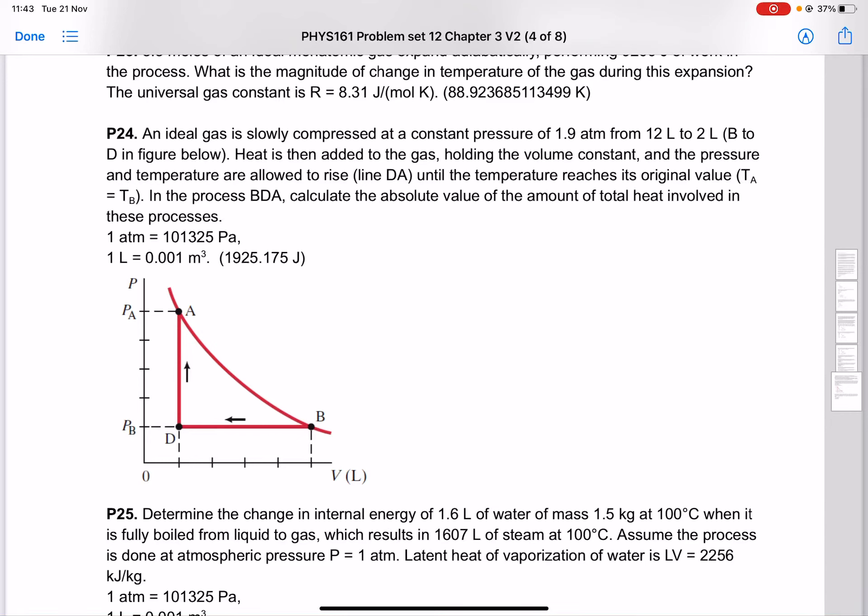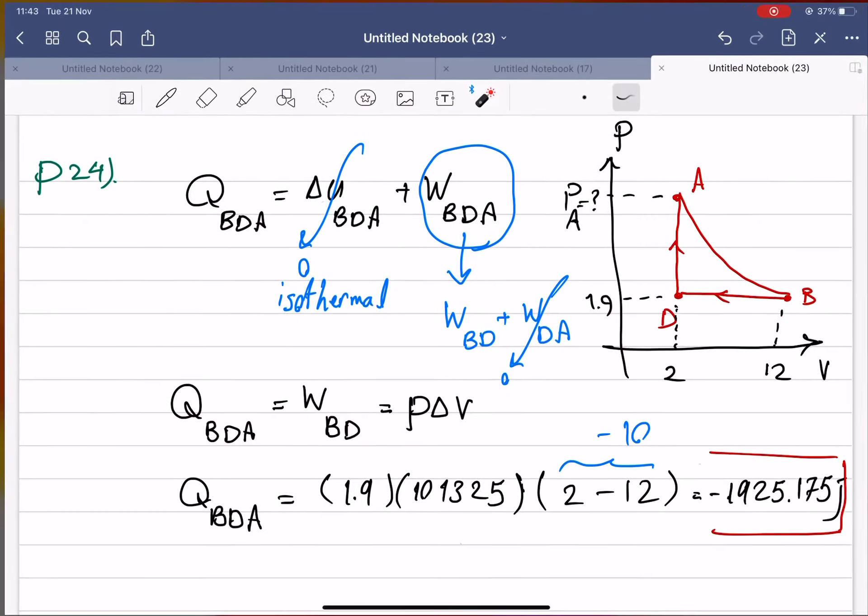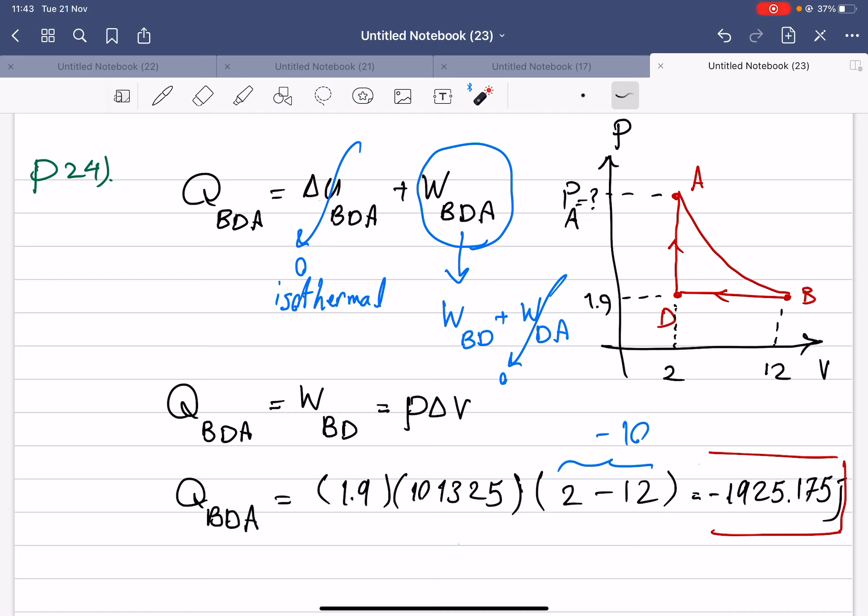Problem 4 is about an ideal gas experiencing two isobaric and isovolumetric processes. An extra condition is that points A and B have the same temperature, so Ta equals Tb. To solve this problem, let's go to the solution. Like the previous one, we can write the first law of thermodynamics.